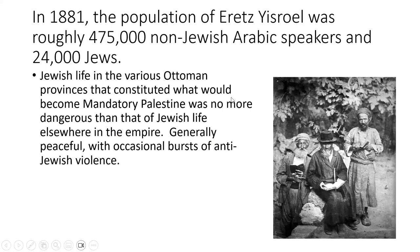In 1881, the population of Eretz Israel was about 500,000, based on Ottoman census data — not particularly efficient or accurate, but the best we have. If anything we undercount Arabic speakers, since they were harder to track. Jews are easier because there was a small population fixed in a few cities. So: about 475,000 non-Jewish Arabic speakers and about 24,000 Jews, a mix of Ashkenazim and Jews from the Middle East.